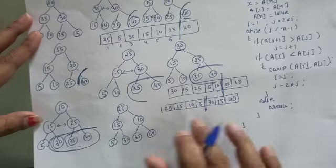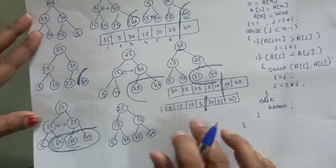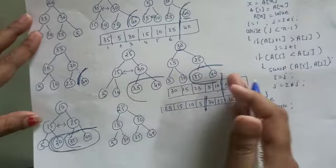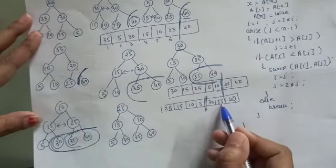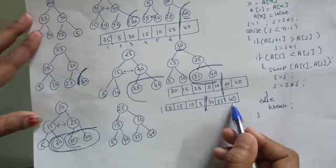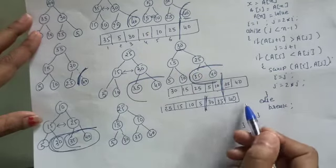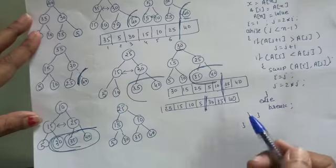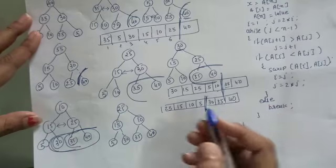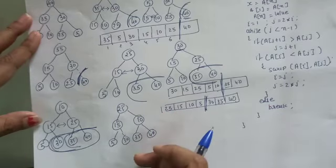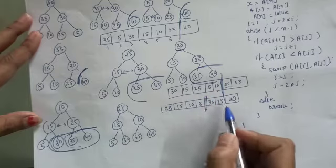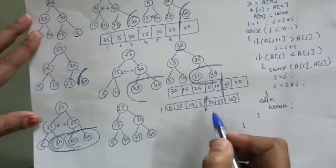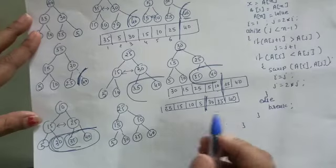This is an example of in-place sorting, meaning we do not require any additional space to sort the elements. You can see the elements are sorted — in descending order if we access the array from right to left, and in ascending order if we access the array from left to right after the complete delete procedure.